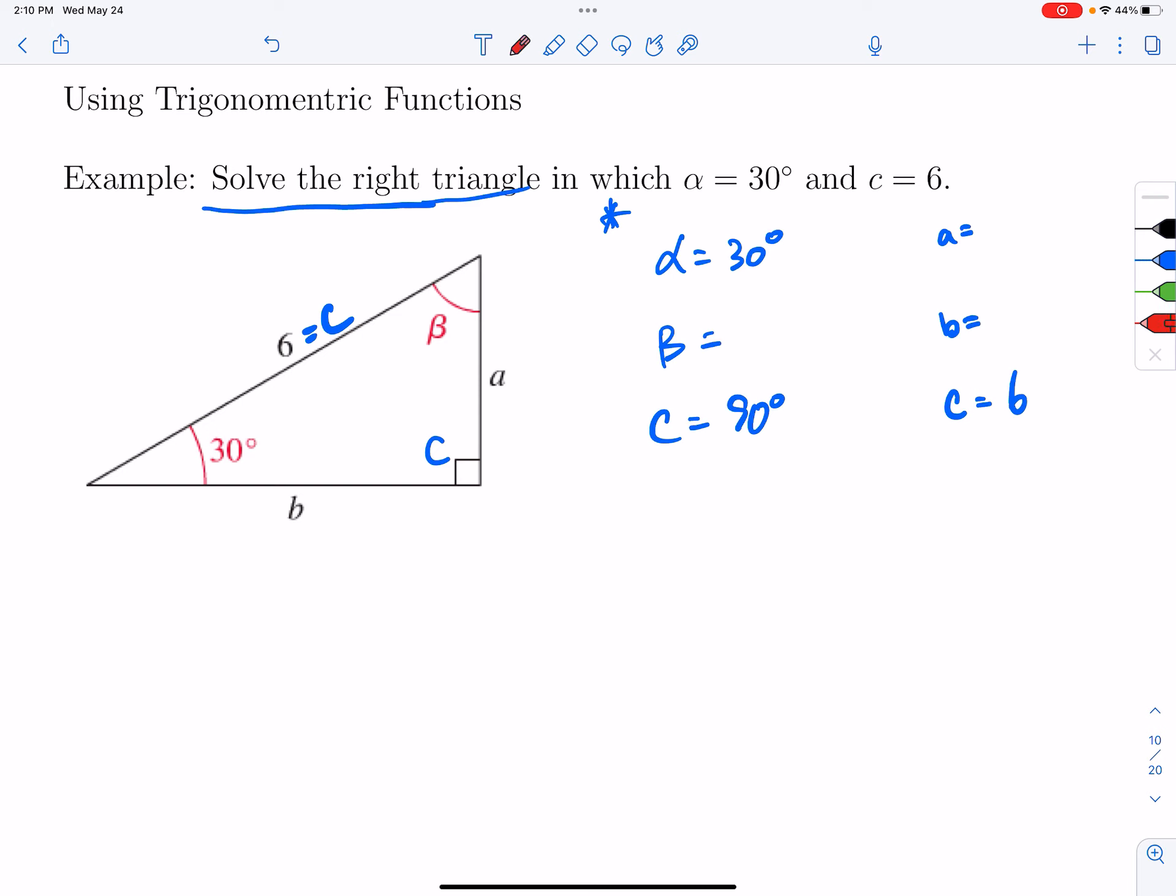Okay, so there's a few different ways we can probably go about this. Let's see, how about I find side a first? So if I'm trying to find side a, we want to think, well, is there a trig function that relates side a here with this angle and this other given side?